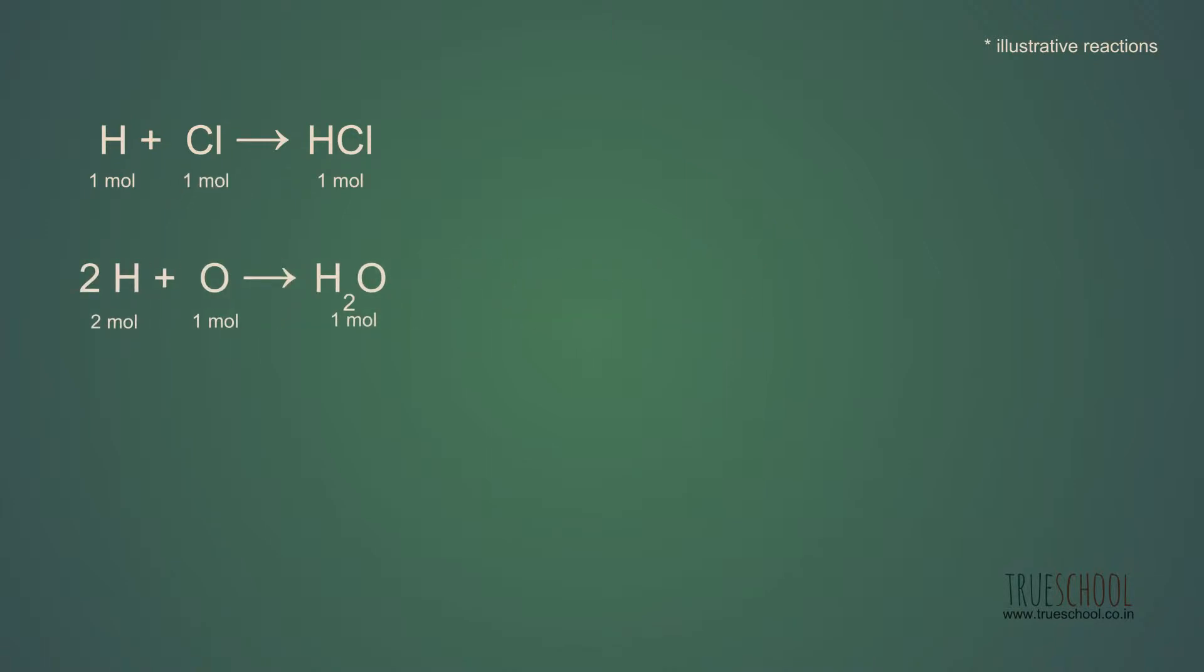Whereas, chlorine only reacts with one mole of hydrogen atom. Na plus Cl gives NaCl. In the third reaction, we see that same single mole of chlorine atom reacts with one mole of sodium atom, just like its case with hydrogen atom.